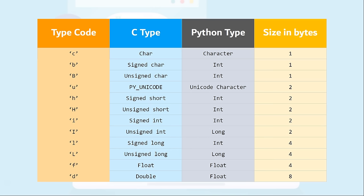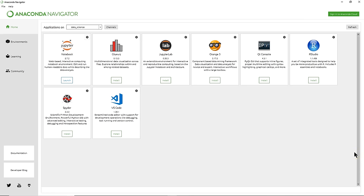That's a brief overview of type codes. We're not going to go into more detail on that, but we do want to jump in and actually create an array and show you how arrays work and what you can do with them. To do this, you're going to use your favorite Python editor or IDE. I personally use Anaconda with Jupyter Notebook. There are also other editors like Spyder. We'll go ahead and launch our Jupyter Notebook.